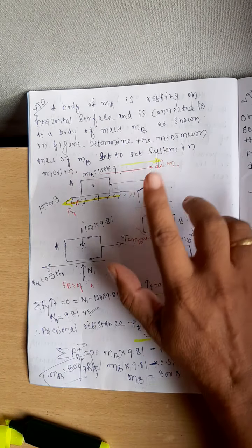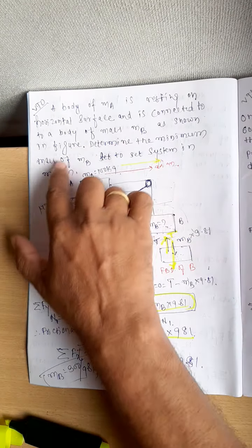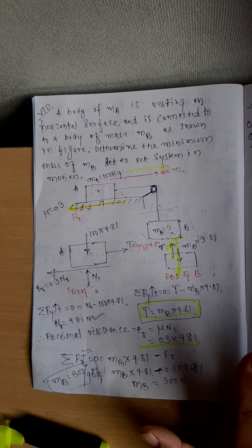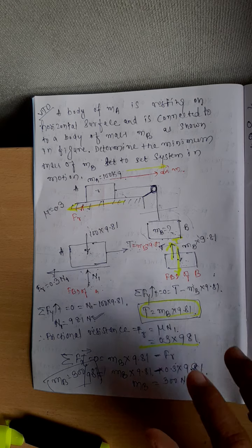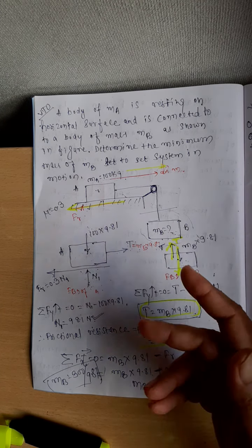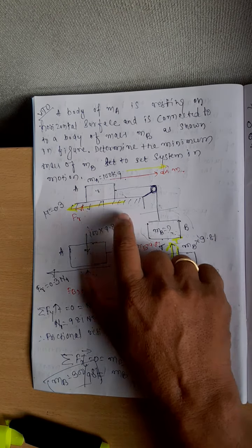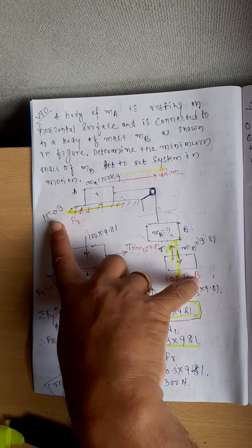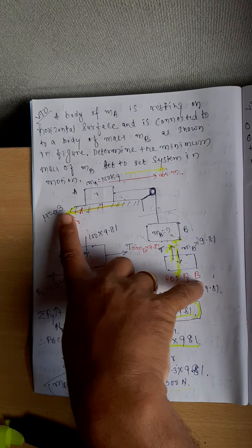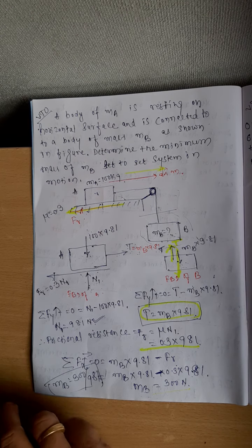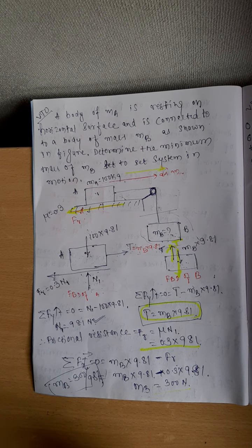That is why we consider the block moving in this direction due to this force. The most important step in this type of problem is: first, decide based on all the forces acting on the body in what way the system moves. Once the direction of motion is marked, mark the frictional resistance and draw the free-body diagram. The problem is solved.